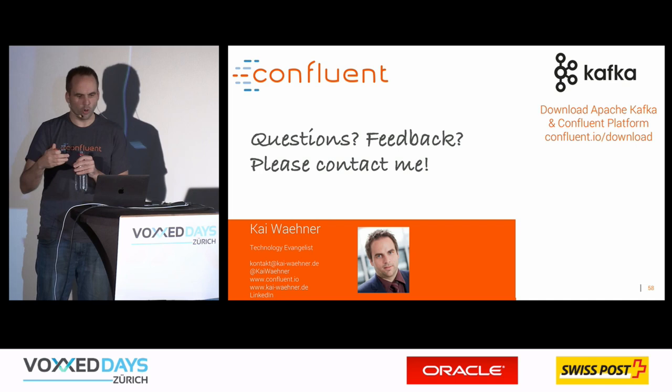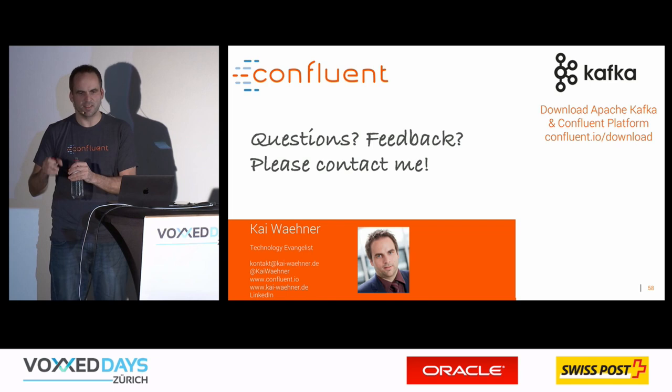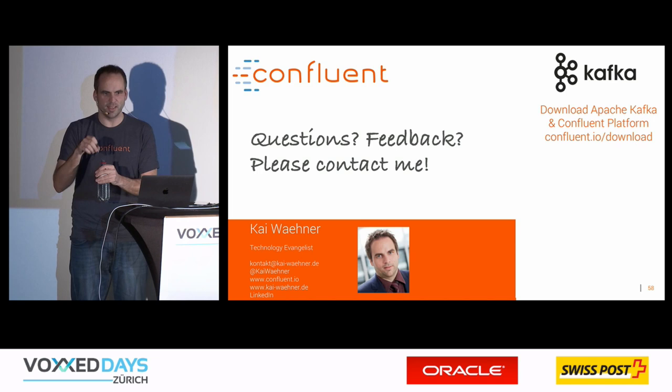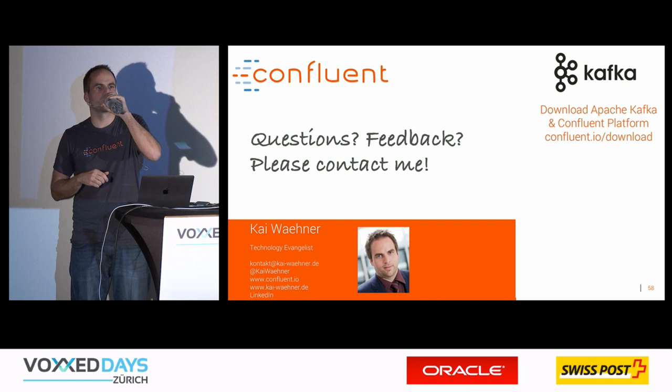Regarding tables in Kafka Streams and KSQL: they are persisted locally in each instance, either in memory or on disk with RocksDB, in the Java process where they run. Additionally, state is also stored in Kafka topics, which provides fault tolerance — if one of the 100 instances goes down, the state is not lost because it's also backed by Kafka topics.